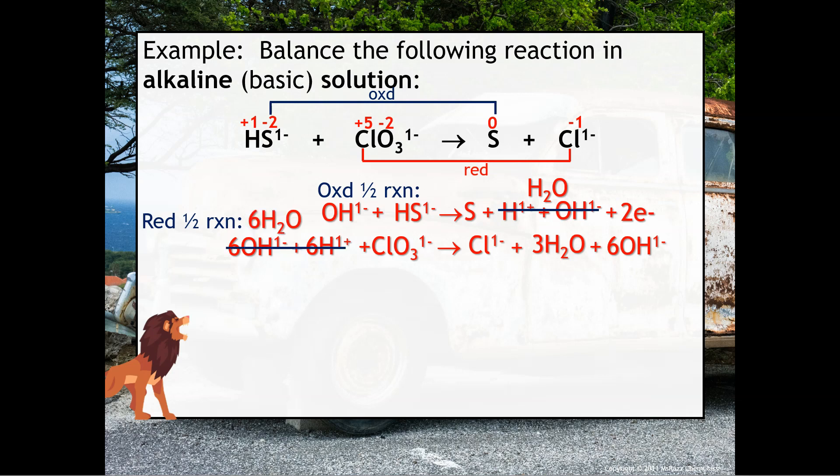We recombine so that the six H+ and six OH- on the left become six waters. Then we add electrons to balance for charge. On the left-hand side, there's a net of −1. On the right-hand side, be very careful — there's −1 from the chlorine, and six negative ones from the six hydroxides, giving a net of −7 on the right. You have to train your eyes to account for those coefficients. With −7 on the right and −1 on the left, we need 6 electrons to balance for charge.